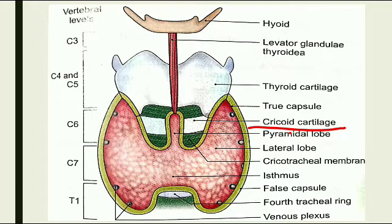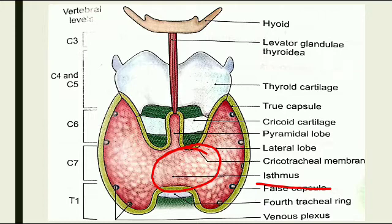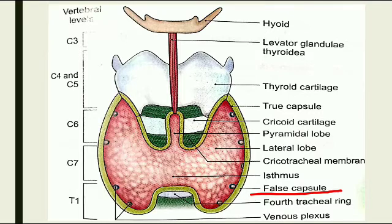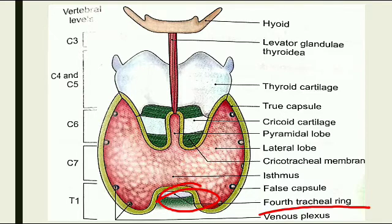The cricoid cartilage is visible, and the lateral lobe is present laterally. The cricotracheal membrane is shown in green, along with the isthmus. The false capsule is derived from the pre-tracheal layer of the deep cervical fascia, and there is a venous plexus between the capsules. The fourth tracheal ring can also be appreciated, helping to identify the vertebral level position of the thyroid gland.